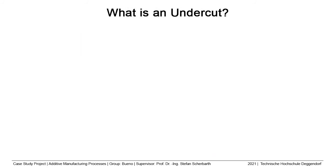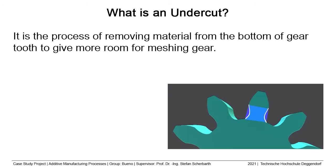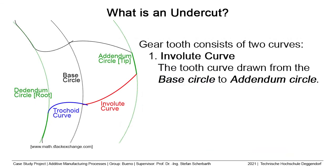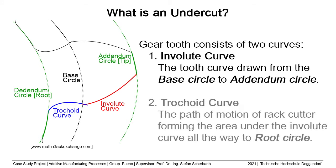What is undercut? The undercut of gears is also called deeper cutting and indicates the phenomenon of cutting the root of the gear deeper than the involute tooth curve. This can happen when there is interference between the tooth cutting tool and the gear or between two meshing gears. A gear tooth consists of two curves: the involute curve, which is the curve drawn from the base circle to the addendum circle, and the trichoid curve, which is the path of motion of the rack cutter forming the area under the involute curve all the way to the root curve.